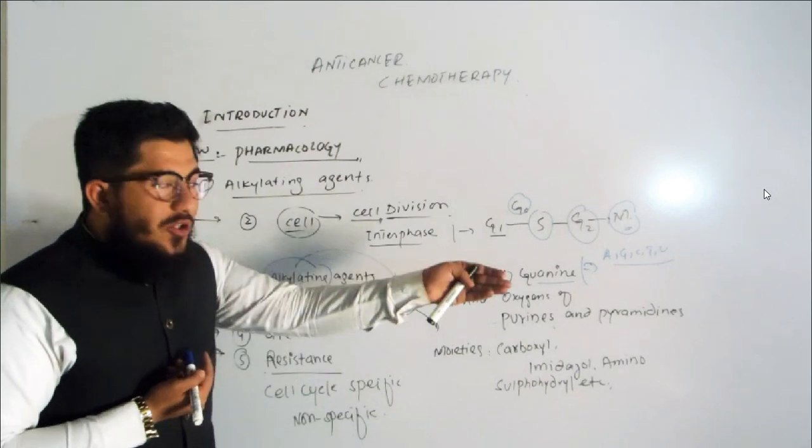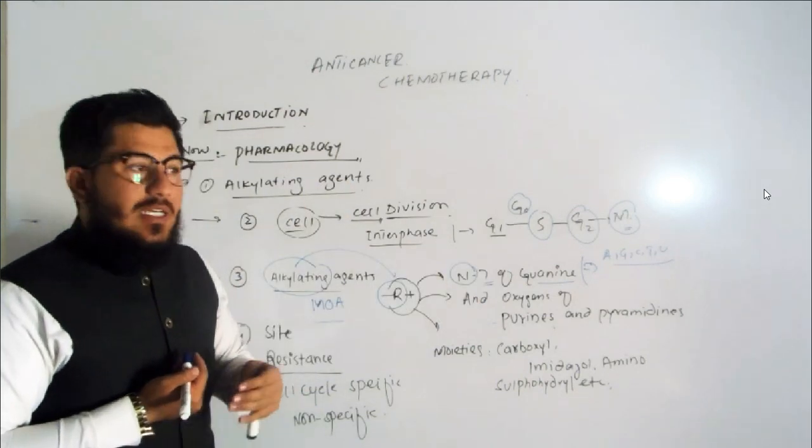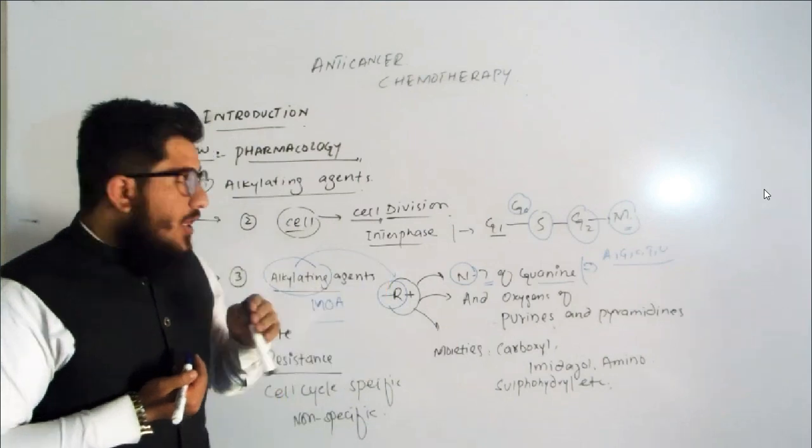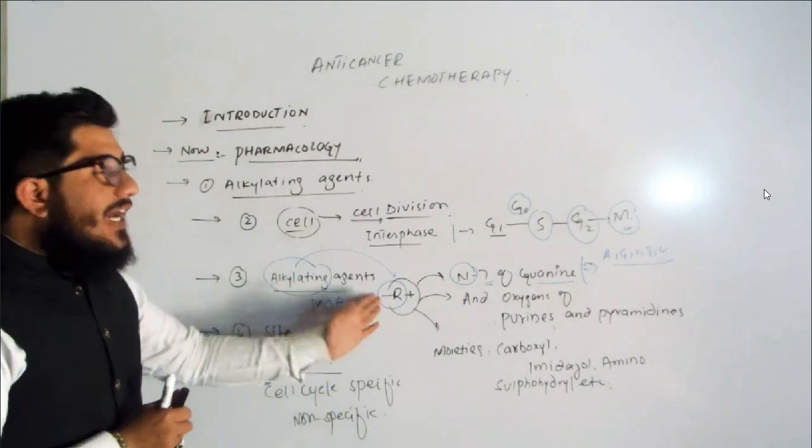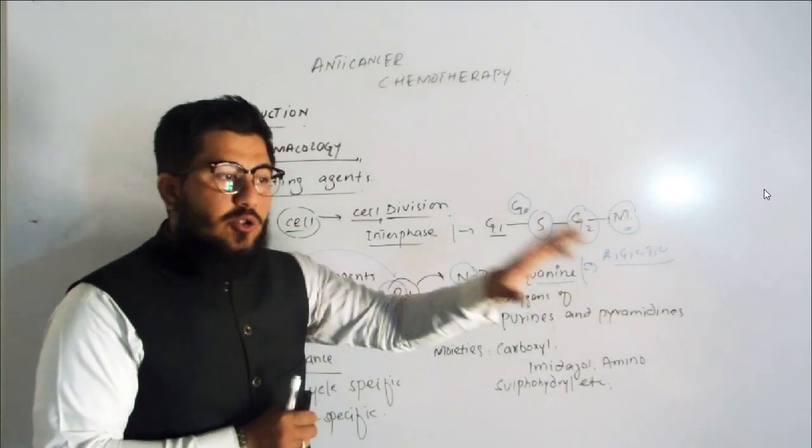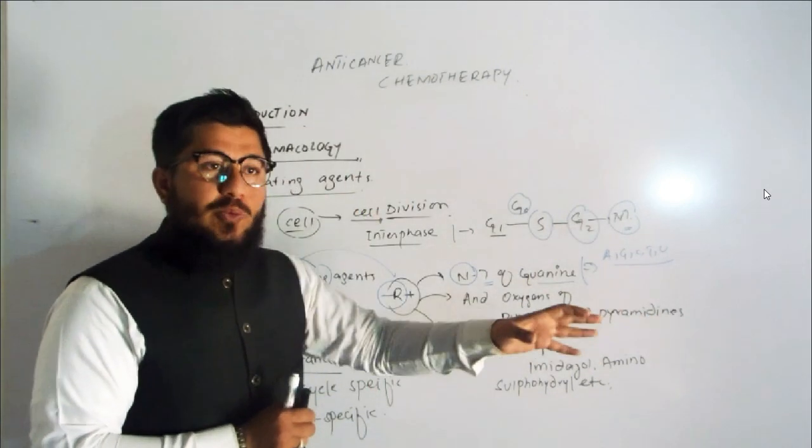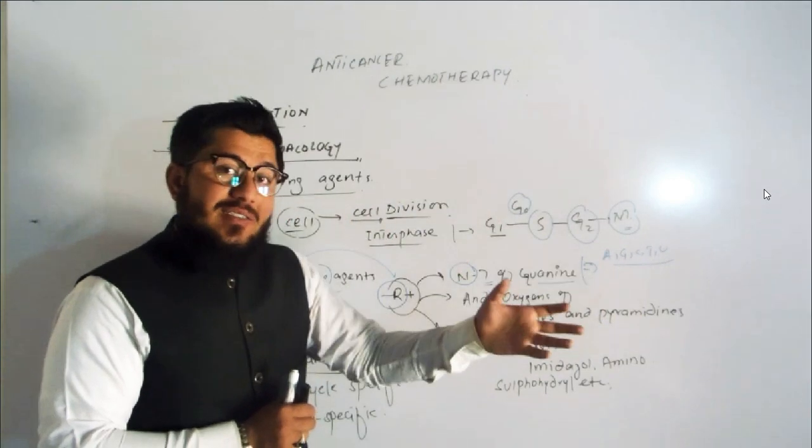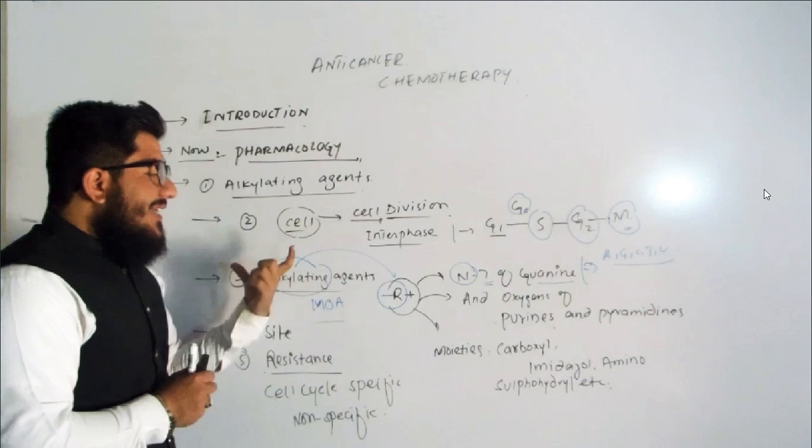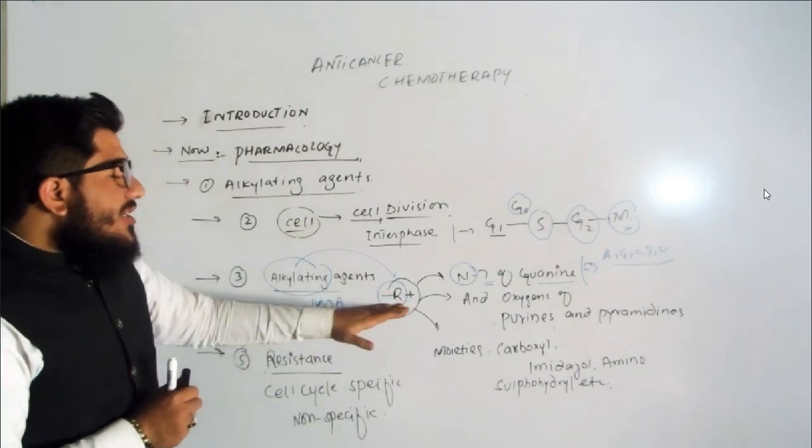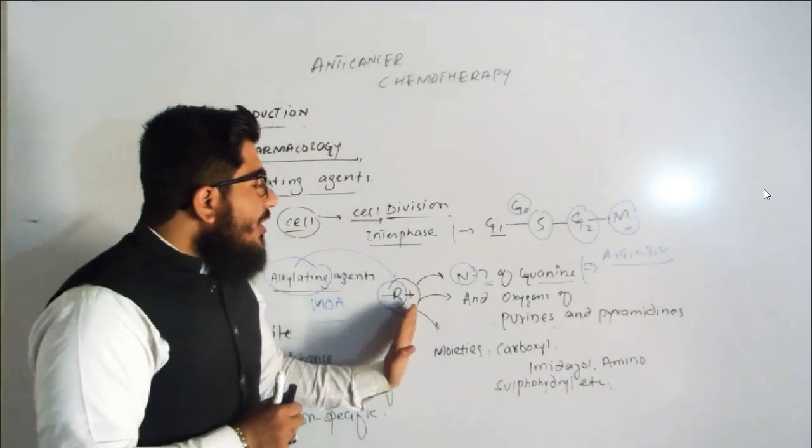Alkylation is the addition of an alkyl group to some other moieties or particles. So what are alkylating agents doing? Alkylating agents are actually adding the alkyl group to some other things, to some other moieties, groups, or substances.